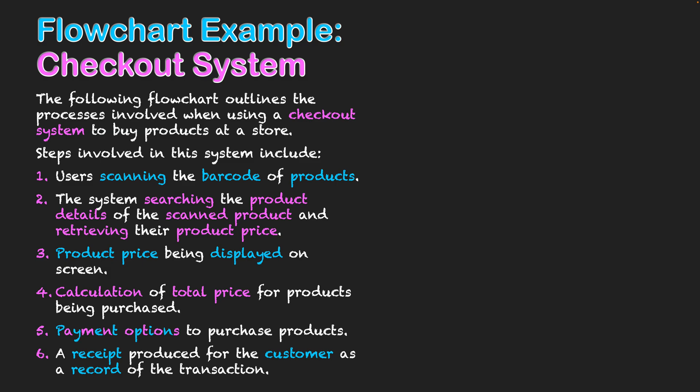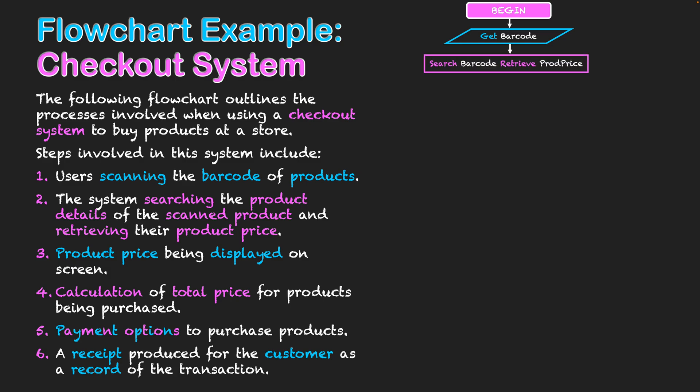So let's start looking at the diagram itself. I'll start off with my terminator beginning the program. The first step is to scan the barcode as a user input to get our barcode data. Then we search that barcode within the system, retrieve the product price, and return that product price so we can display it on screen, confirming that we've scanned the right product and this is how much it costs.